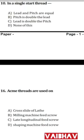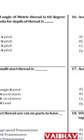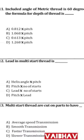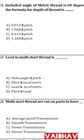Question 10 confirmed: In a single-start thread, lead and pitch are equal. Question 11: The included angle of a metric thread is 60 degrees. The formula for depth of thread for metric threads is 0.6134 multiplied by pitch. The answer is C — 0.613 × pitch.